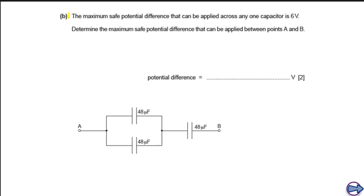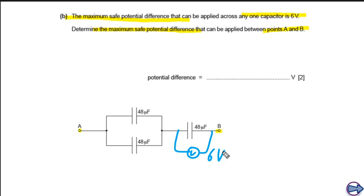For part B, it is given that the maximum safe potential difference across any one capacitor is 6 volts. We need to find the maximum safe potential difference we can apply between points A and B. The maximum PD across the series capacitor can be 6 volts. The question is: how much potential difference can be applied across the two parallel capacitors?